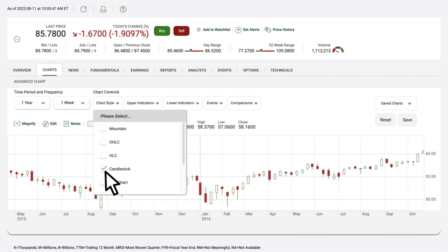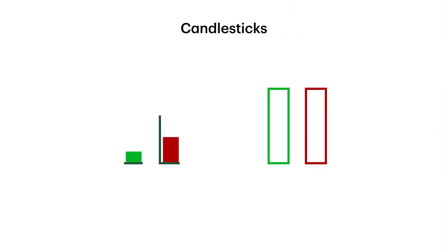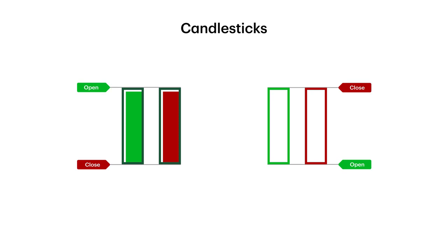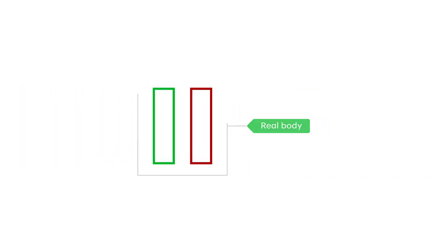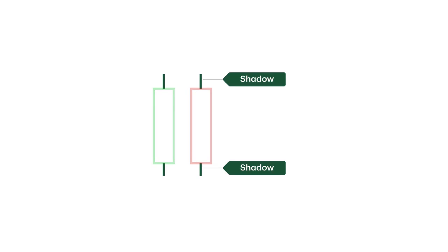That said, when it comes to trading, it's the candlestick chart that ultimately takes the cake. Like bars in OHLC charts, individual candlesticks contain four data points representing the open, close, high, and low prices of the day. They're red when the closing price is lower than the previous candlestick's closing price, and green when the closing price is higher. But they provide even more insights as new elements are introduced, including the body and shadows — the vertical lines above and below the body. Traders tend to find them easier to read.